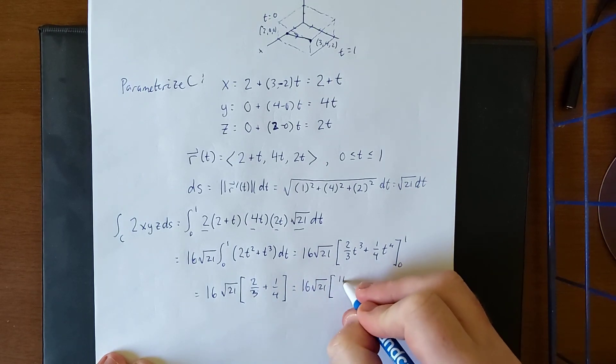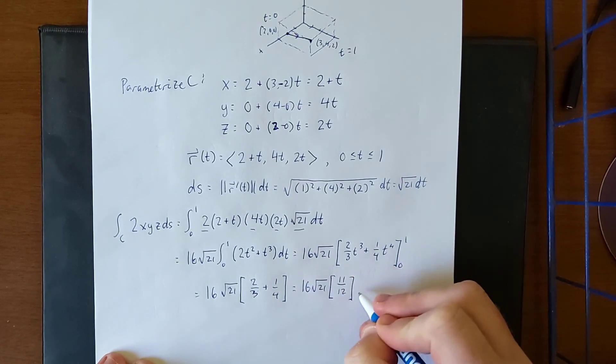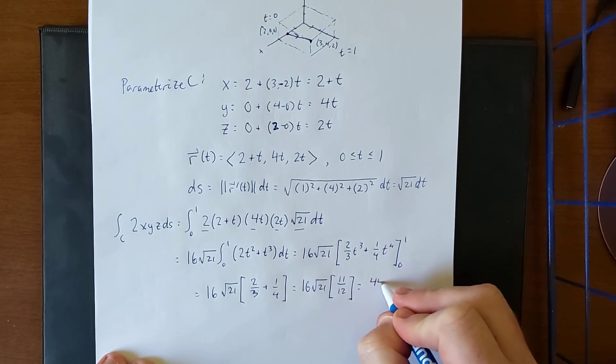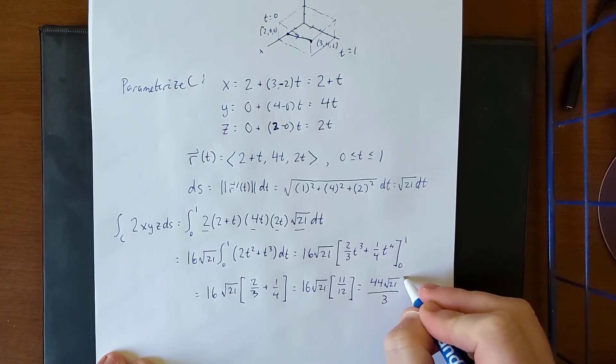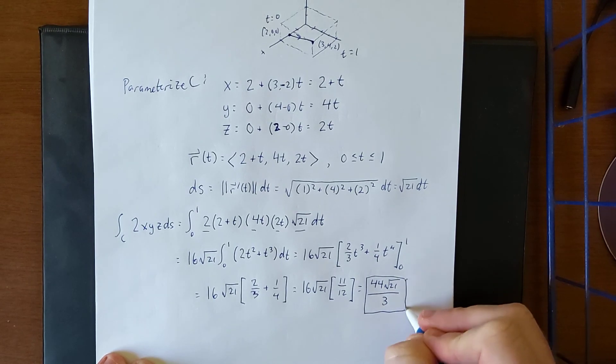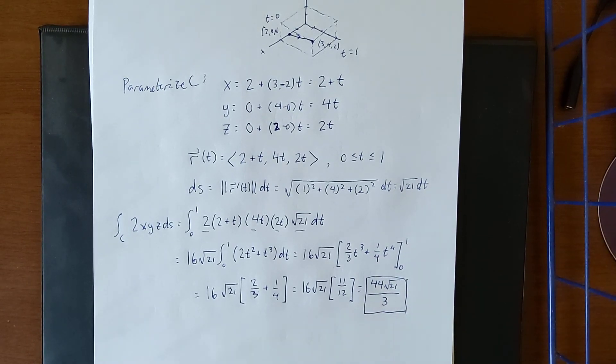Adding these two together will give us 11/12. 16 over 12 can reduce. And upon reduction, that'll give us a final answer of (44√21)/3.